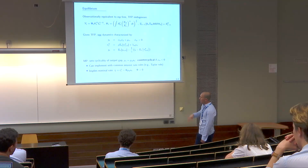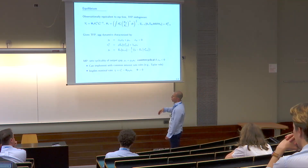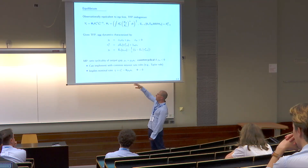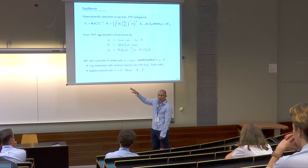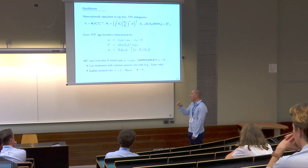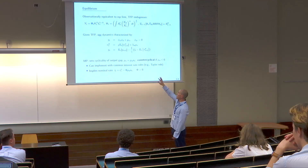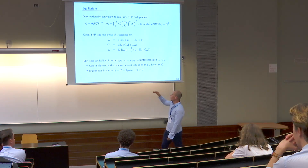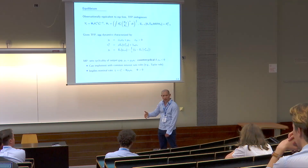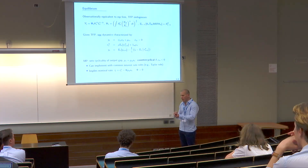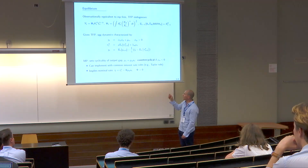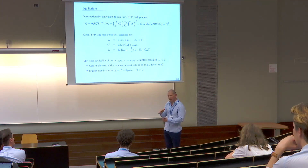I assume monetary policy follows a simple rule, directly setting the cyclicality of the output gap. The central bank chooses mu A, which determines how cyclical the output gap is. I call policy counter-cyclical if mu A is negative — meaning when A is high in good times, the central bank sets a negative output gap, shaving off the top of expansions; when A is negative in a recession, mu T is positive, keeping output above potential to shave off the bottom of recessions.